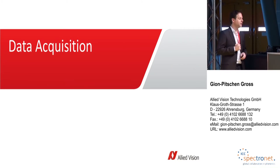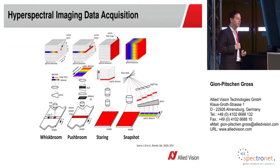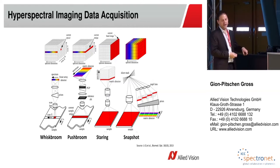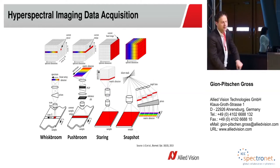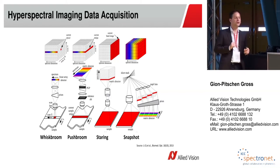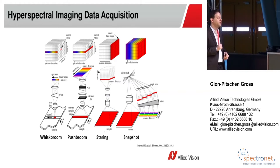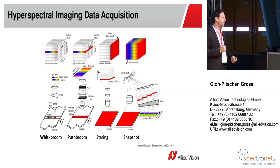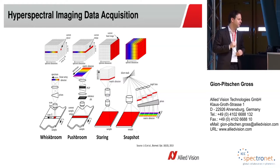How can we acquire such an image? There are commonly different techniques used. The whisk broom technique — not much used anymore — observes pixel by pixel, scanning the whole image and refracting the spectral information onto a line sensor. Much more commonly used is the push broom method, which observes one line at a time. Either the camera scans the sample line by line, or the sample itself moves over the line. The line is then refracted onto an area sensor, building up a so-called hyperspectral data cube.